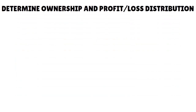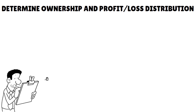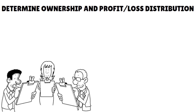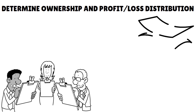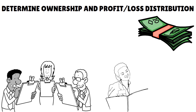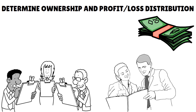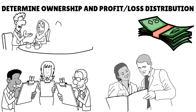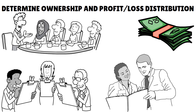Step one: determine ownership and profit and loss distribution. Before putting anything on paper, you want to have the name, address, and ownership percentage of all members. Ownership percentage is usually determined by the amount of money each member contributed to start the LLC. For example, a member who contributes 50% of startup costs will have 50% ownership interest. Some LLCs choose to give equal ownership to all members. The important thing is that everyone agrees on each member's ownership percentage.